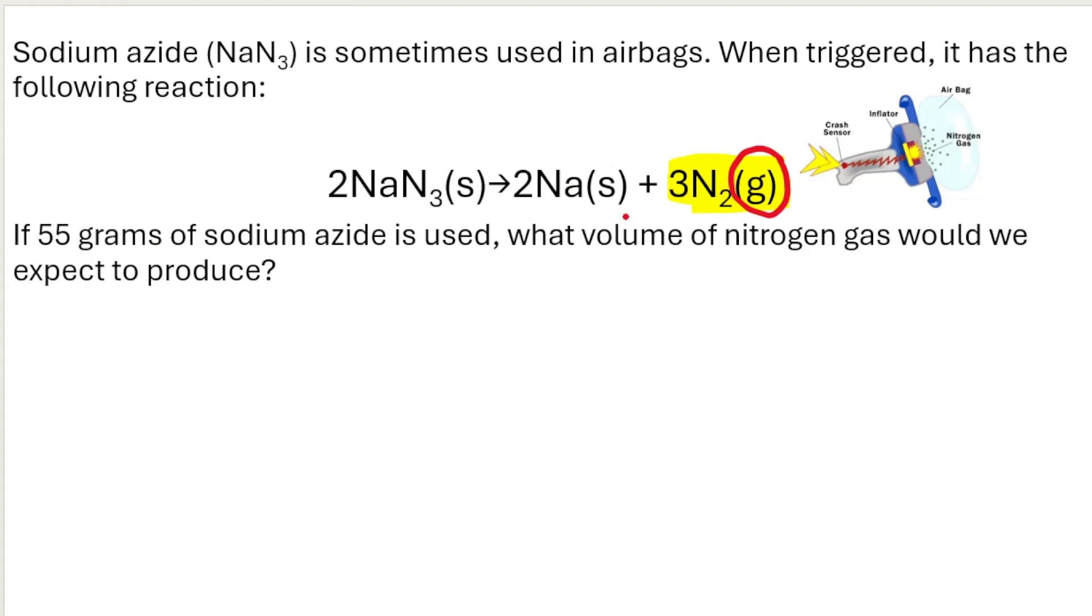They can give you the balanced chemical equation and say, if 55 grams of sodium azide is used, NaN3, what volume of nitrogen gas would we expect to produce? So very similar to the previous lesson that we did, we know that we are given information about the substance over here, the reactant. They want information about a product.